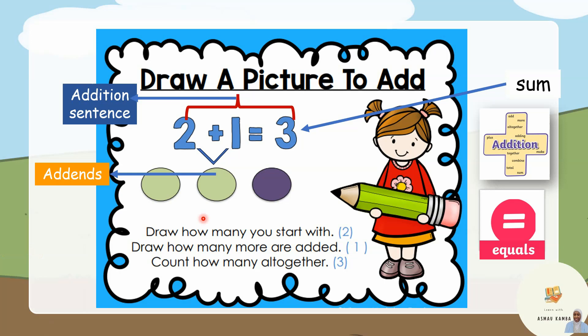Good job. So these are our numbers: 2 + 1 = 3. The sign of addition is here, this one is the sign of addition, and this is the sign of equals. As you can see here, addition means all together, total, sum, or more, add, plus, and so on.